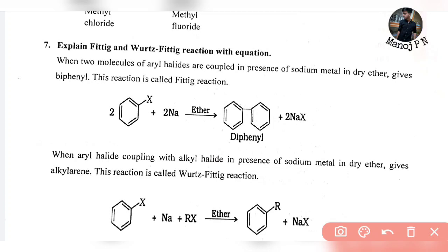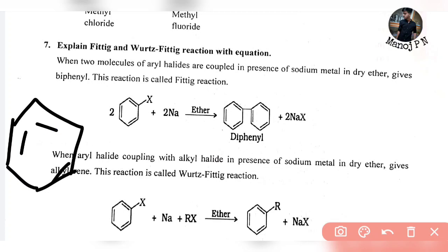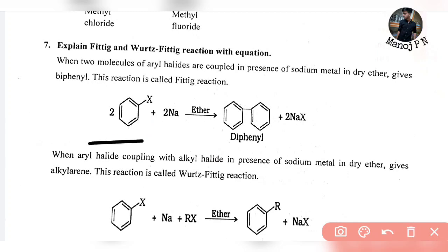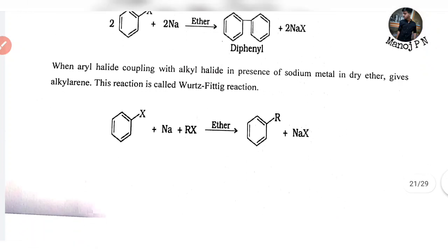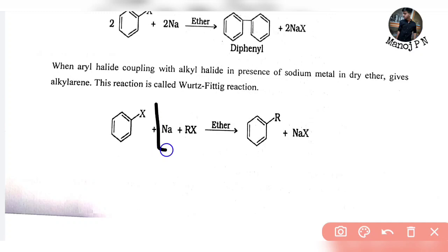So if it is a Fitting reaction, then biphenyl is the product. This is a benzene structure — this is the product of the Fitting reaction. If it is aryl halide reacted with two molecules of energy, heated in presence of sodium metal and dry ether, the two molecules are combined. That is the Fitting reaction. For the Wurtz-Fitting reaction: when aryl halide is coupled with alkyl halide in presence of sodium metal in dry ether.